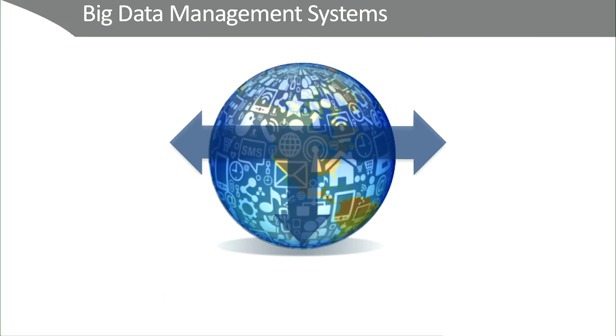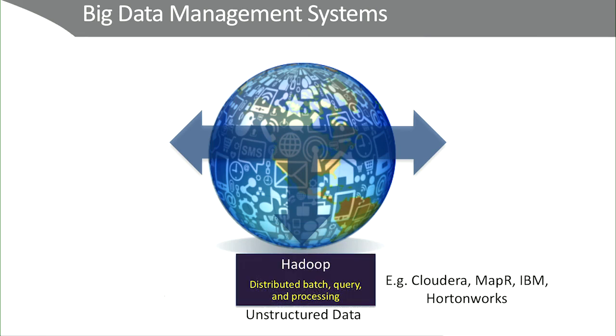When we look at the three V's of Big Data, it implies that there's going to be a Big Data Management System of some kind. For many people, when they think Big Data Management System, the first word that pops to their mind is Hadoop. Hadoop is a very popular system, very specialized in unstructured data and batch analytics. You can buy distributions from companies like Cloudera, MapR, Hortonworks, and IBM.